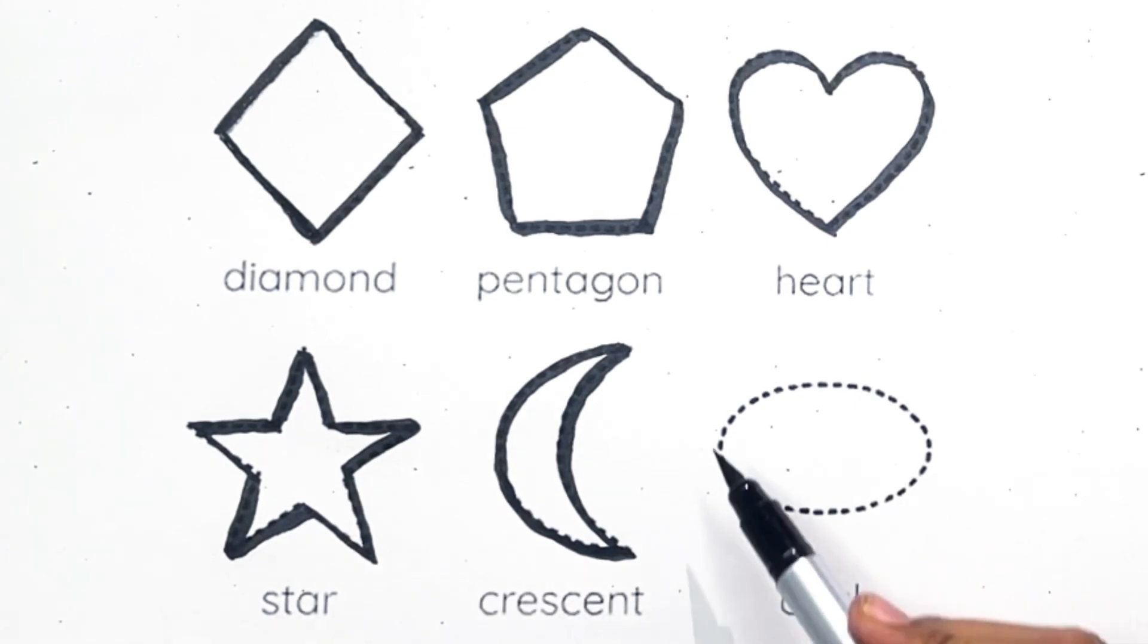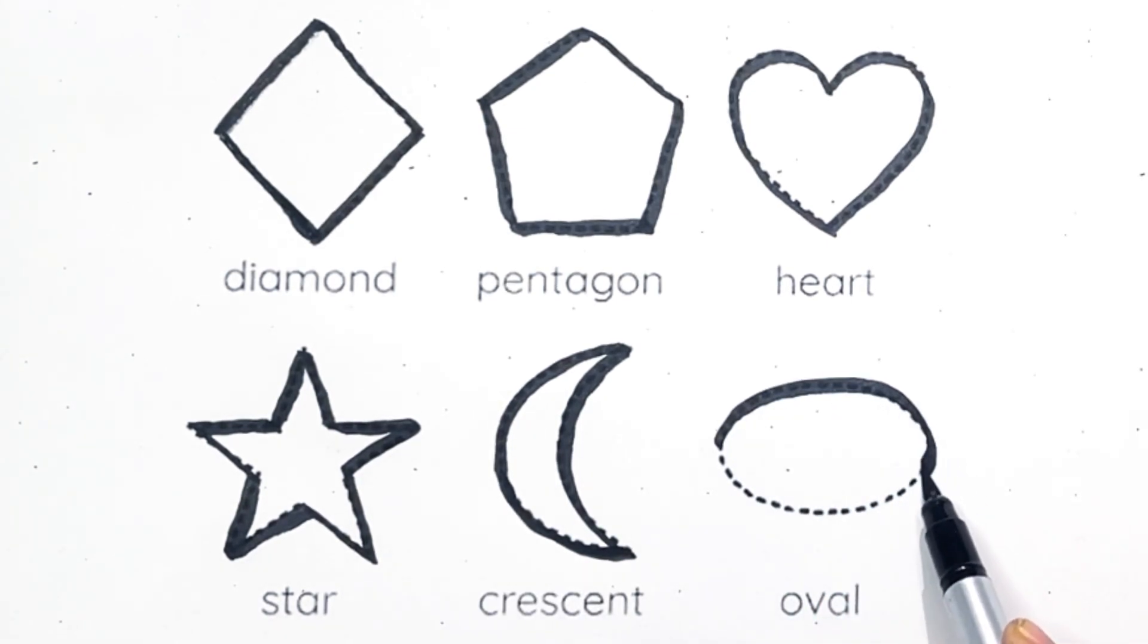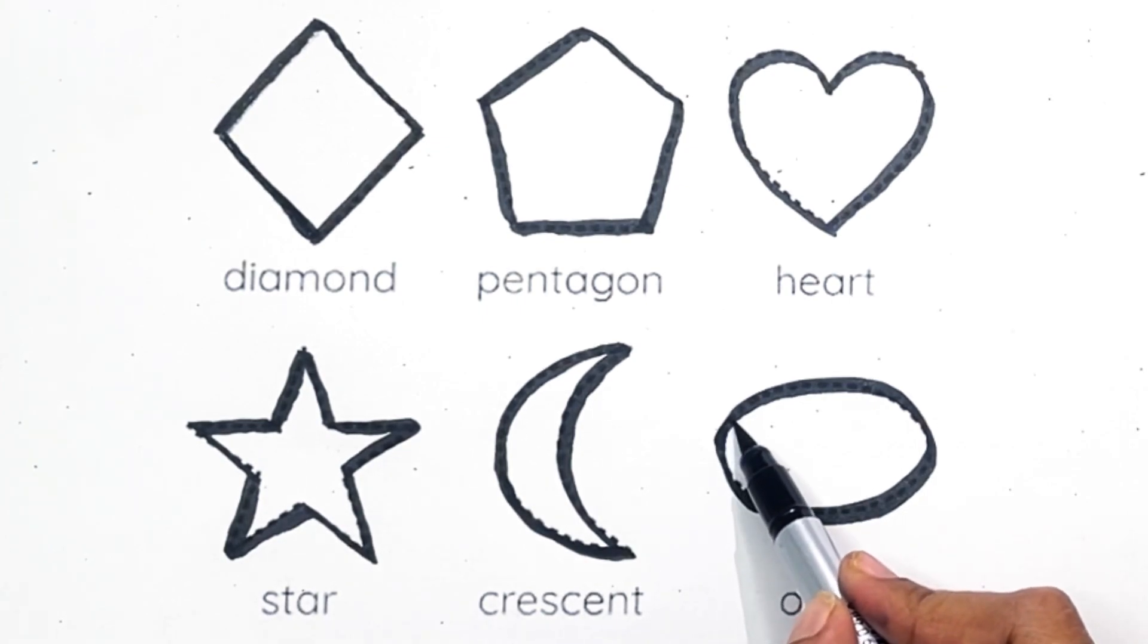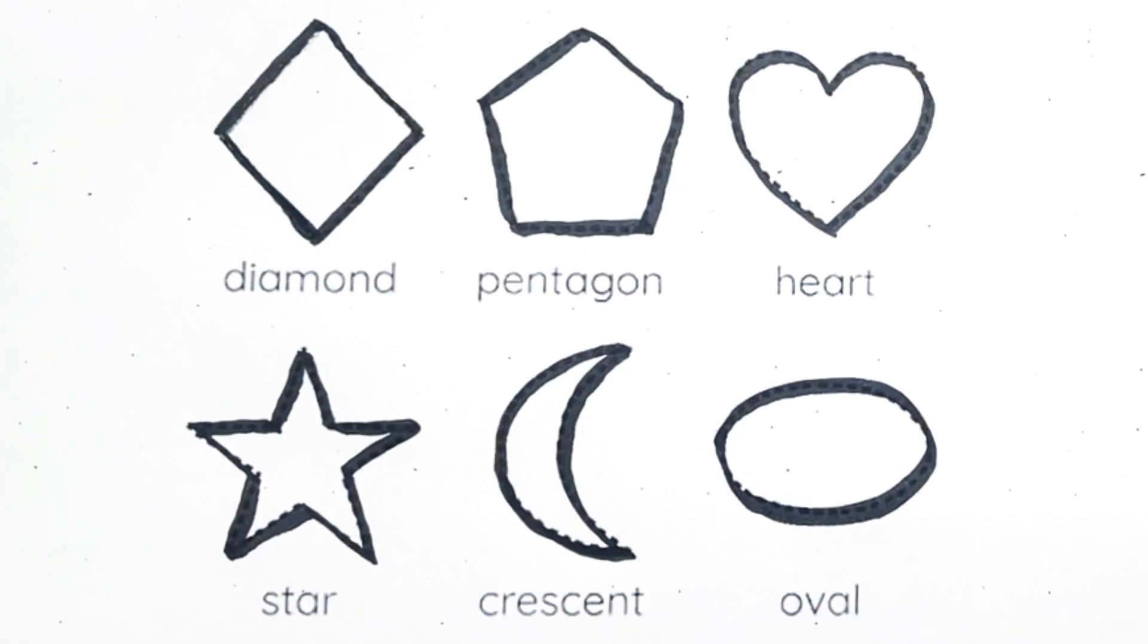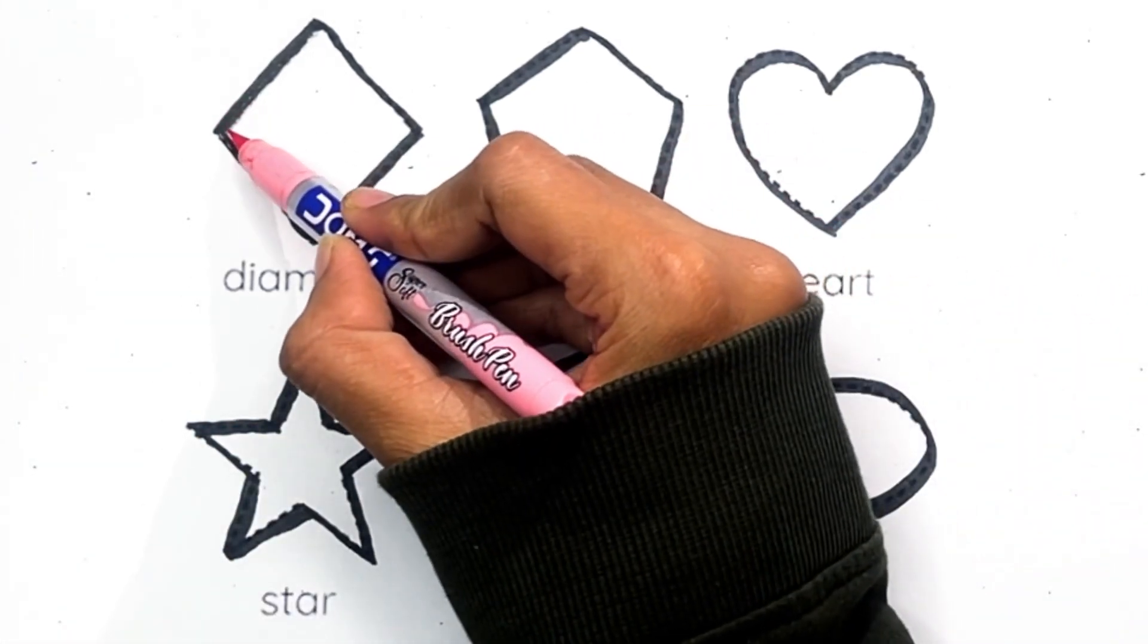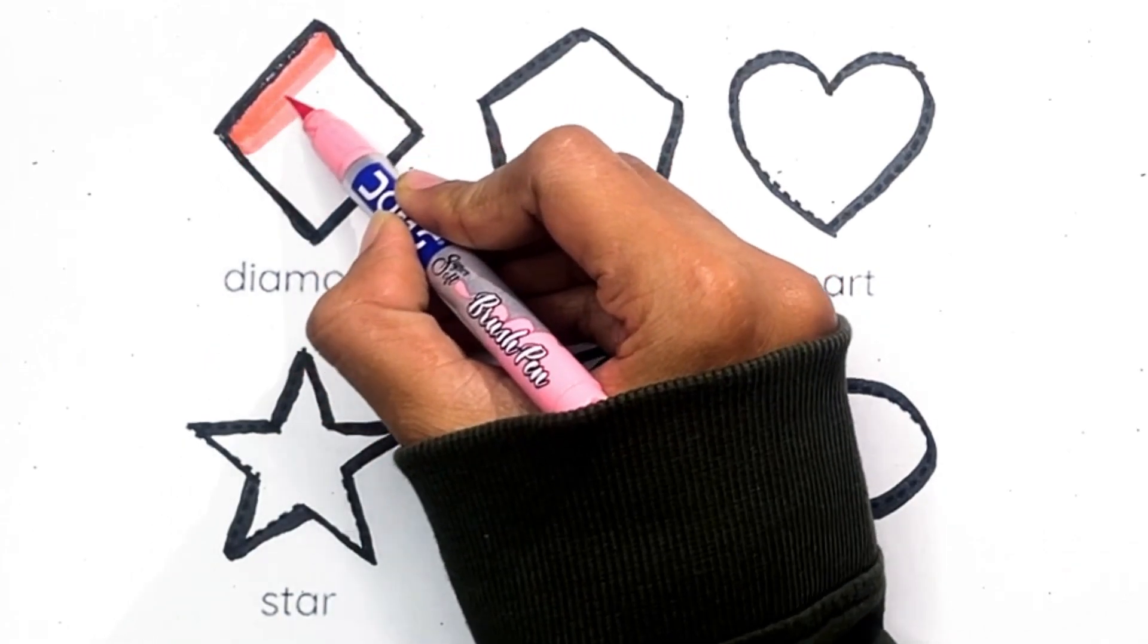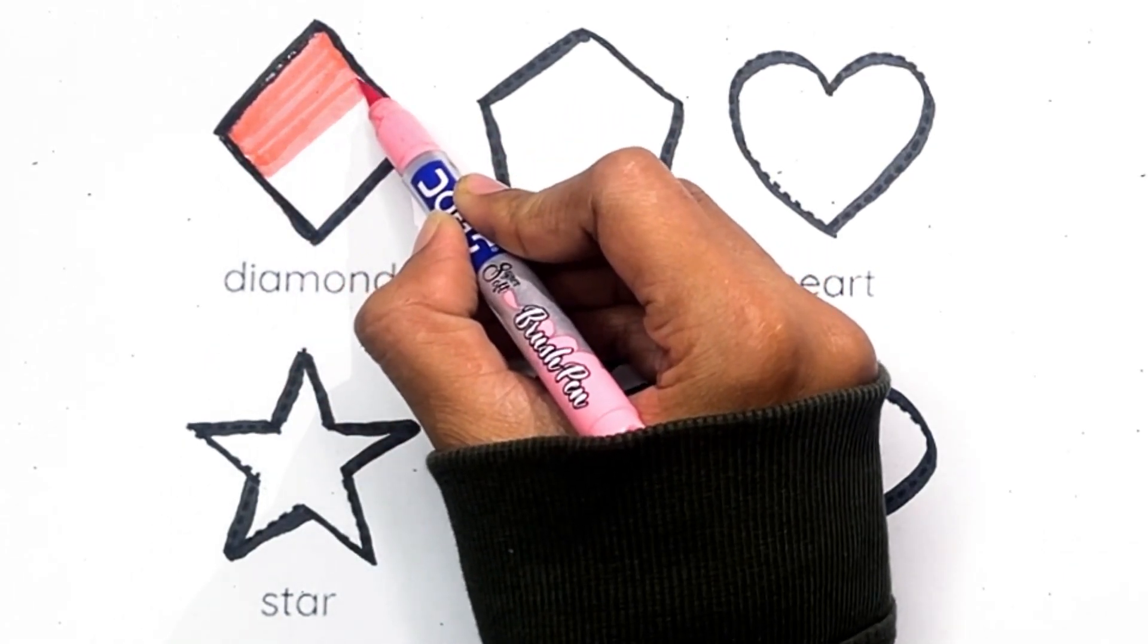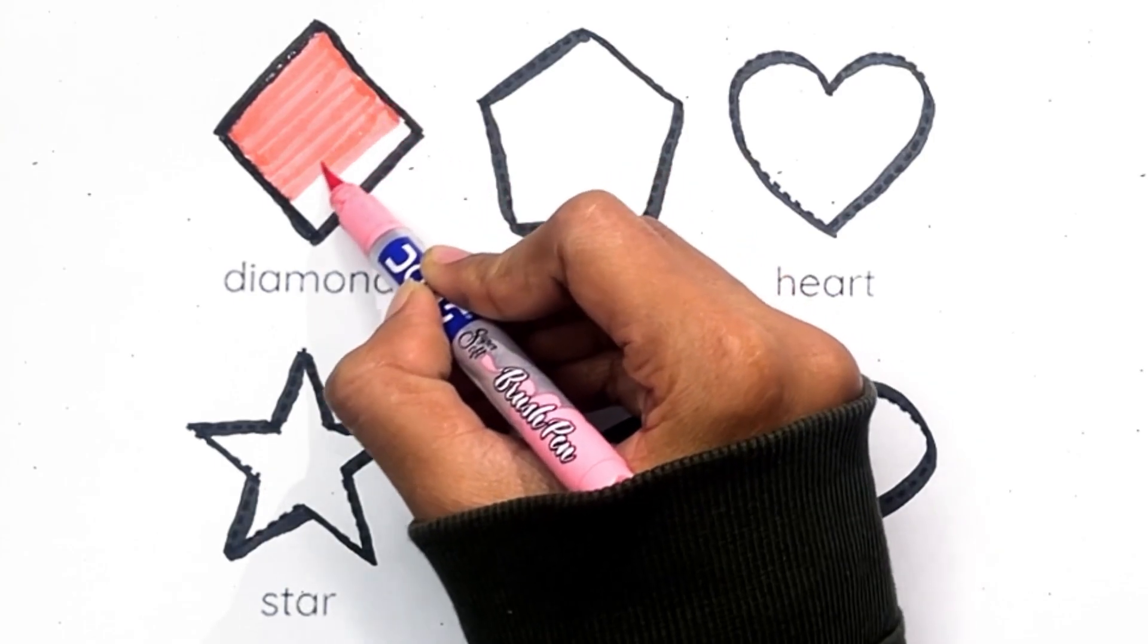Crescent. A, B, C, D, E, F, G, H, I, J, K, L, M, N, O, P, Q, R, S, T, U, V, W, X, Y, and Z. Diamond. Now I know my ABCs, next time won't you sing with me.